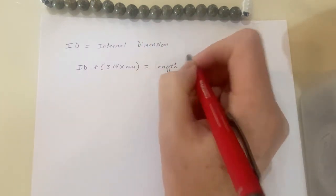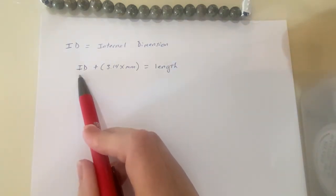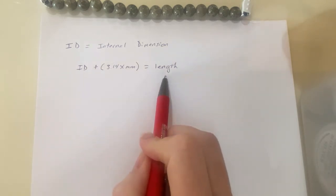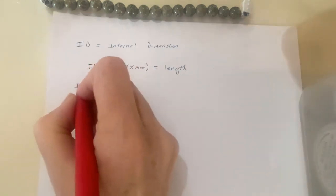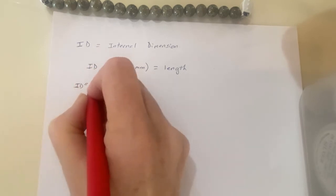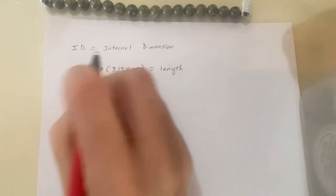Most of the time, if you're in the US, you're using inches for the internal dimension and the length of your bracelet. So we need to do a quick calculation there. Internal dimensions in inches times 25.4 will get you into millimeters.